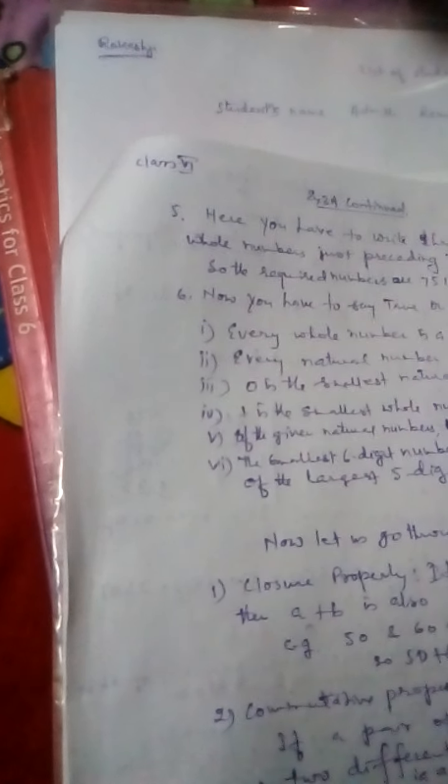Zero is the smallest natural number. It is a false statement. Zero is not a natural number.